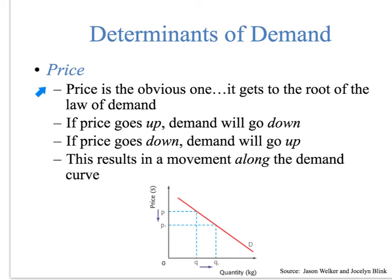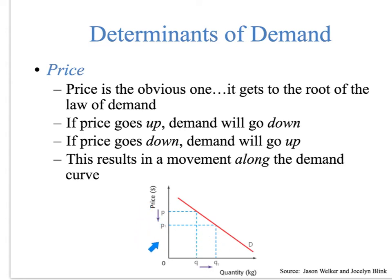Price is the obvious one — it gets to the root of the law of demand. Check out my other video on the law of demand. It's really simple: if the price goes up, demand will go down; if price goes down, demand will go up. This results in a movement along the demand curve. Looking at this generic demand curve: if the price is at P and goes down, the quantity demanded is going to go up. If the price is at P1 and goes up to P, the quantity demanded will drop. Anytime price changes, there's a movement along the demand curve, because price is already on the vertical axis and quantity demanded is on the other axis.